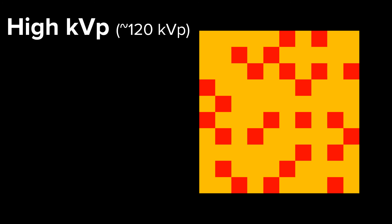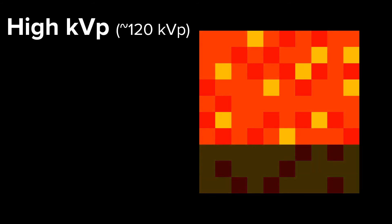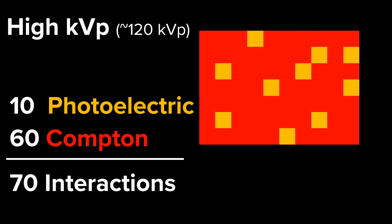Now, let's see what happens when we raise the KVP. Notice how the overall number of interactions goes down, but those that do interact have a greater chance of being Compton. And now that there are more Compton interactions, there is more scatter being produced. And remember, mass does not produce scatter.